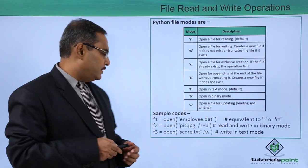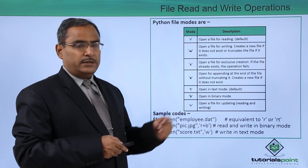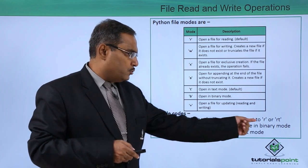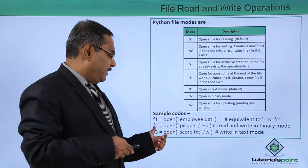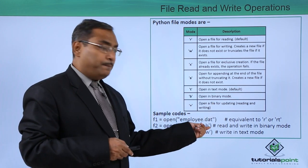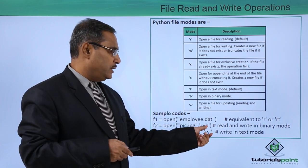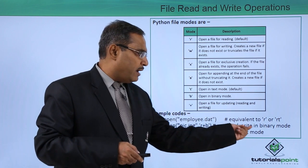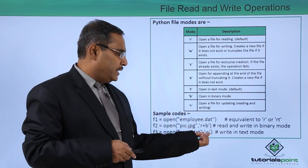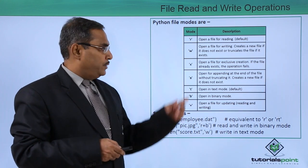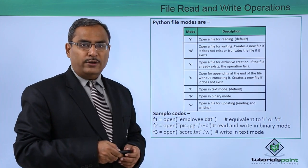Let us go through some examples. F1 = open('employee.dat') — here we did not mention any mode, so by default R mode will be used, equivalent to 'r' or 'rt' (read text mode). F2 = open('pic.jpg', 'rb') — R stands for read operation and B is binary mode, so this is read in binary mode. F3 = open('code.txt', 'w') — that is write in text mode. In this way, sample codes show how these modes can be used while opening a file.